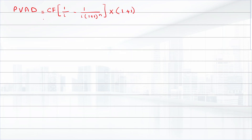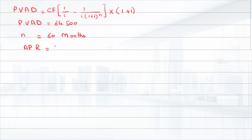In this question, we have the present value of annuity due equal to $64,500, n is 60 months, and the APR is 5.4%.